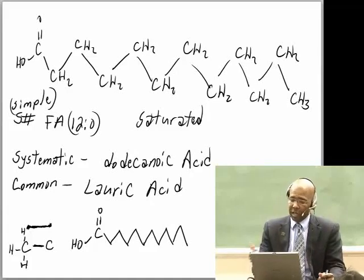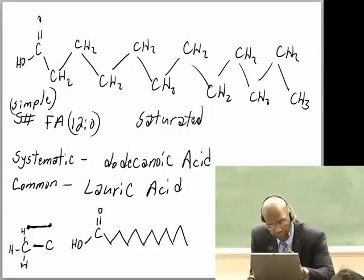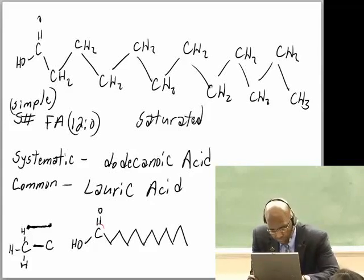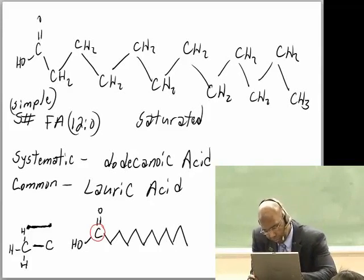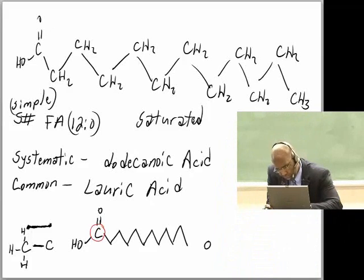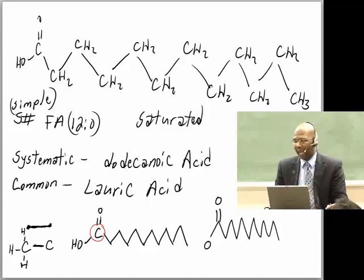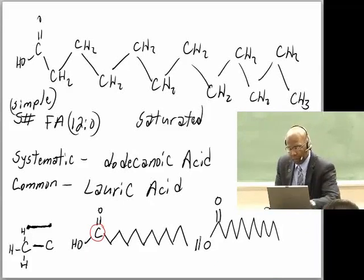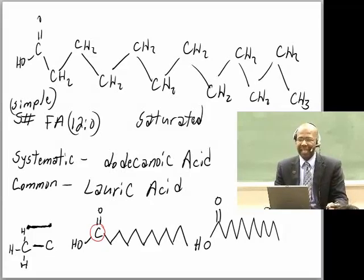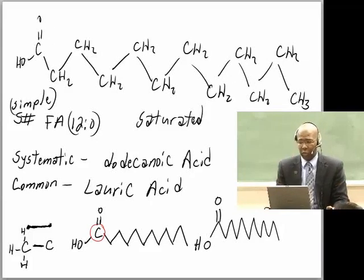Additionally, we don't even have to draw the first carbon explicitly. A simpler way is to put our oxygen here, then count the zigzag vertices: 1 through 12, with a double bond oxygen at the end. That's dodecanoic acid — lauric acid. Again, a much simpler way of representing our fatty acids, because you're going to have to draw a lot of them. So it's good to have this shorthand understood.